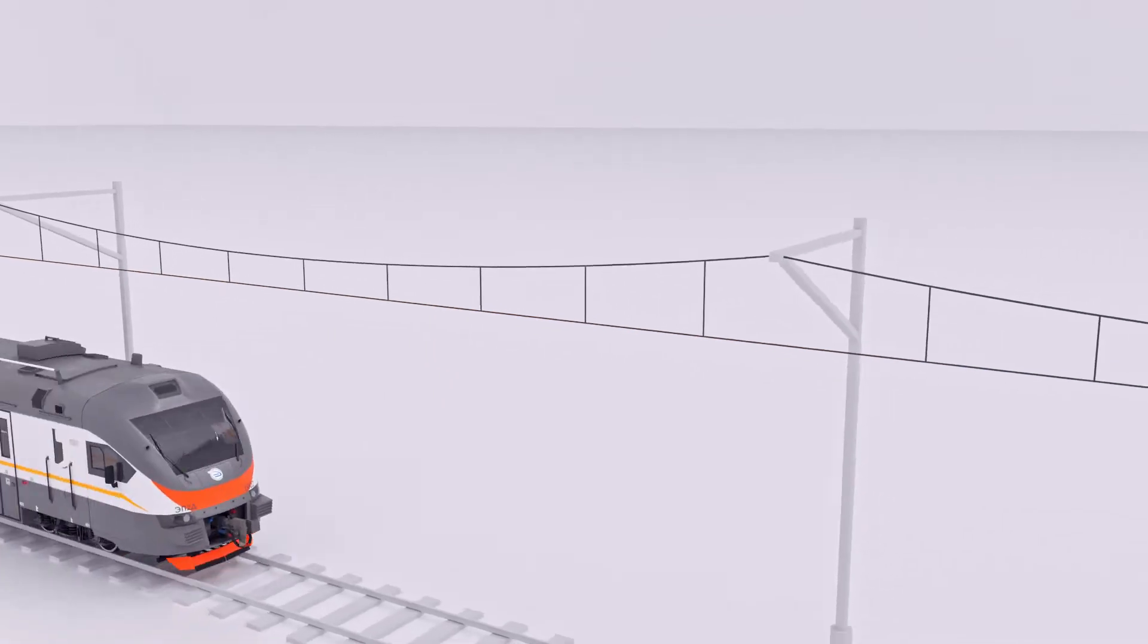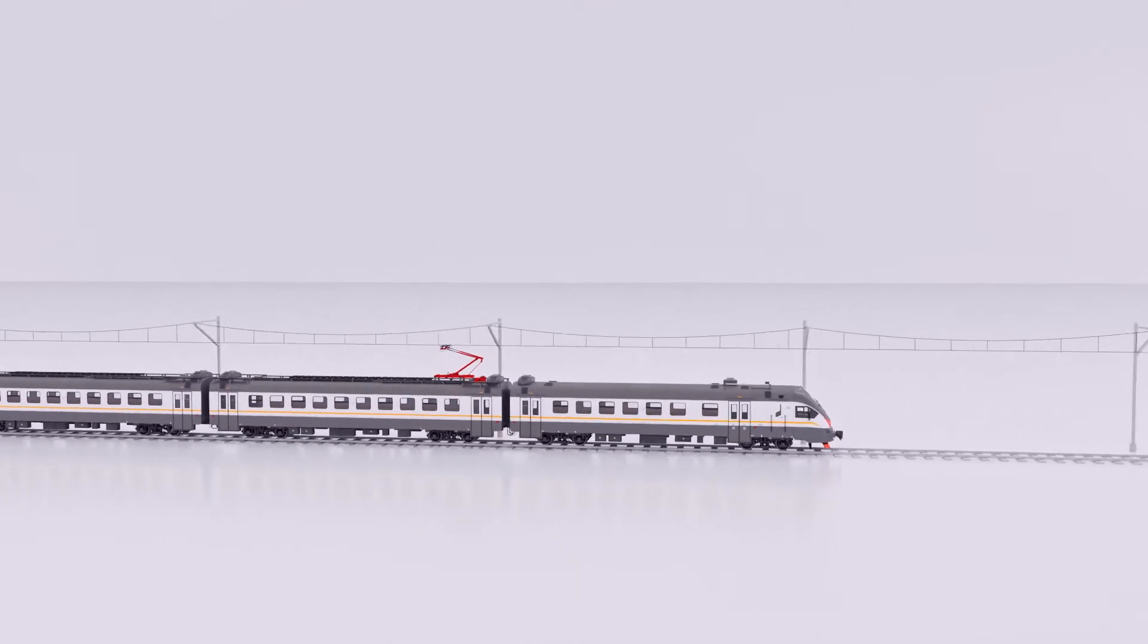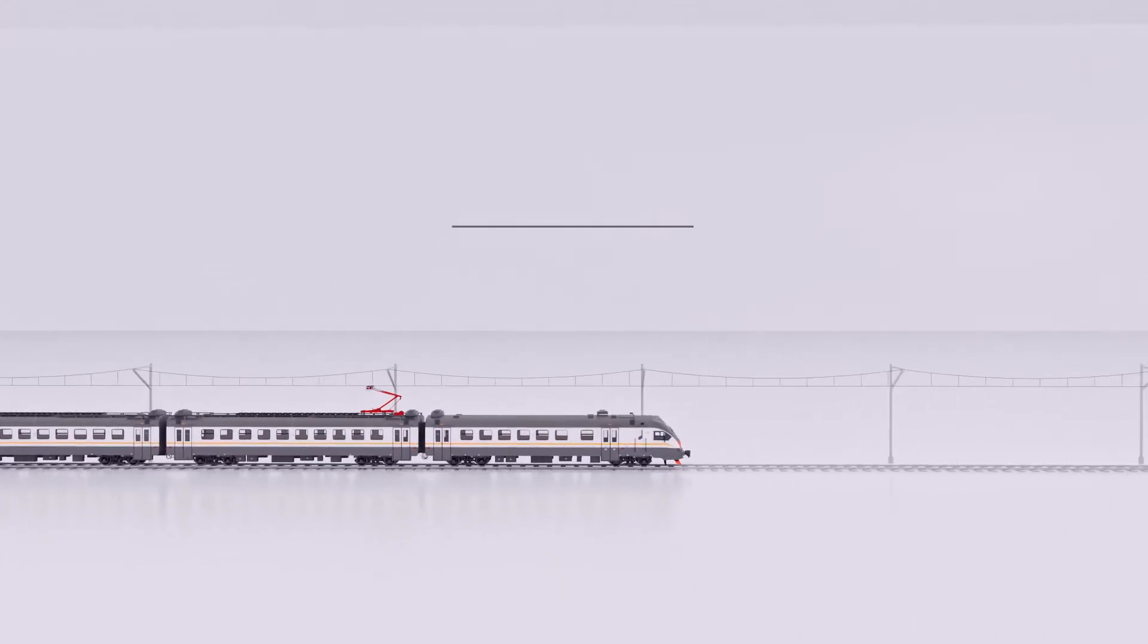Normally, to achieve the highest performance, the pantograph and the overhead catenary are designed in a way that the contact wire remains always fully horizontal.